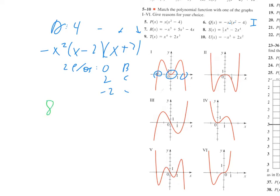Next up, number eight. Number eight is in standard form, so the biggest exponent would be six — that's a degree six positive — going up to the left and up to the right. To factor this, I would take out one half x to the fourth, and if you did that, this would turn into x squared minus four.